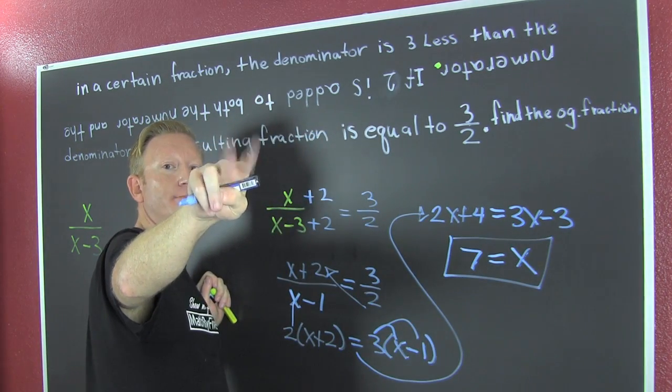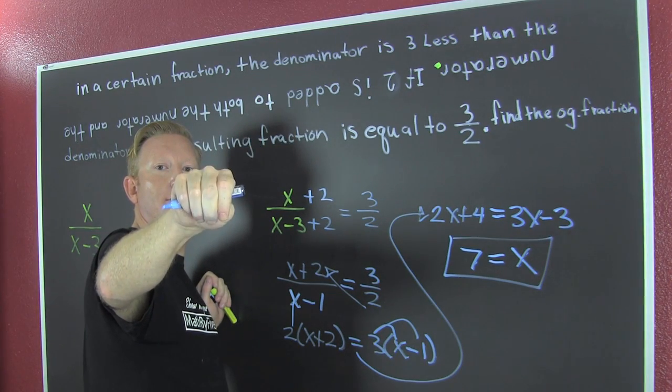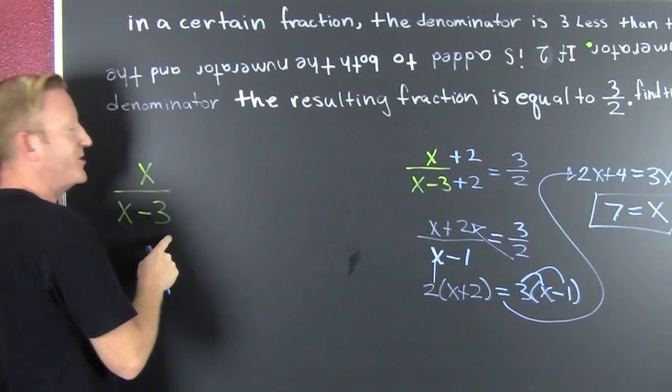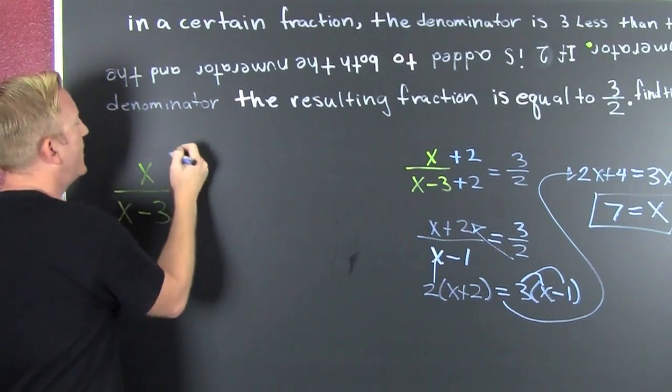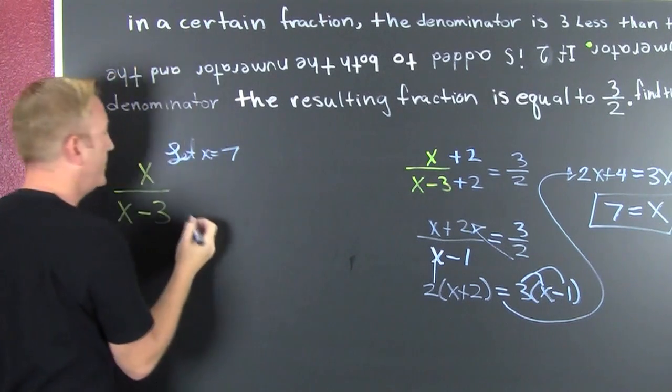And this is a two-part problem. Let's go get that other part. Since x is seven and this is our certain fraction, let's just substitute. Let x equals seven. Boom, boom, boom.